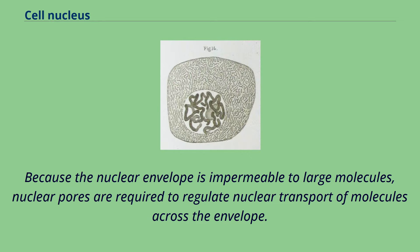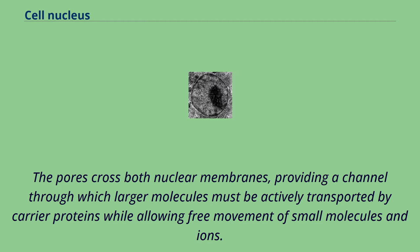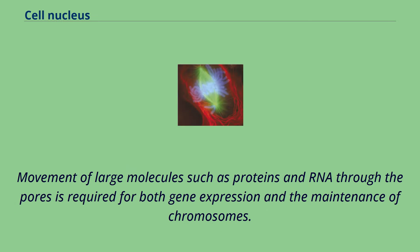Because the nuclear envelope is impermeable to large molecules, nuclear pores are required to regulate nuclear transport of molecules across the envelope. The pores cross both nuclear membranes, providing a channel through which larger molecules must be actively transported by carrier proteins while allowing free movement of small molecules and ions. Movement of large molecules such as proteins and RNA through the pores is required for both gene expression and the maintenance of chromosomes.